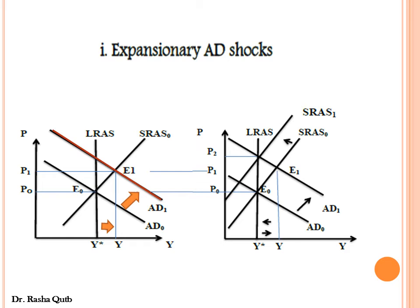How could this inflationary gap be eliminated? The cost of production would increase. When cost of production increases, SRAS shifts upward to the left from SRAS-zero to SRAS-1, and the gap is closed at a higher price level. Expansionary aggregate demand shocks have two effects: in the short run, there is a temporary increase in the level of output and national income.